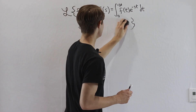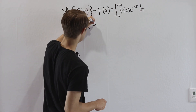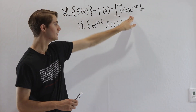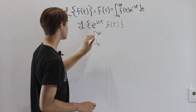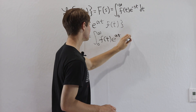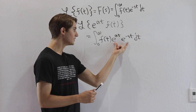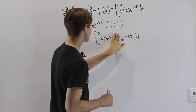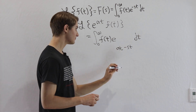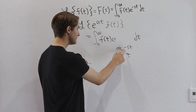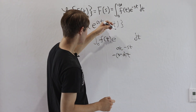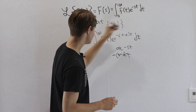The next property involves the Laplace transform of e^(at) times f(t), where a is some constant. Using the definition, we have the integral from 0 to infinity of f(t) times e^(at) times e^(−st) dt. We can combine the exponentials by adding exponents to get e^(at − st). Factoring out t, we write this as e^(−(s−a)t).